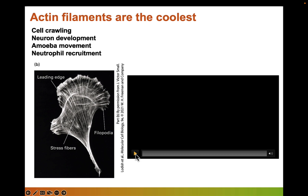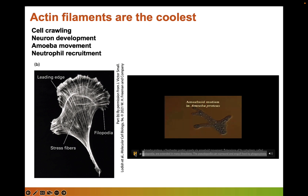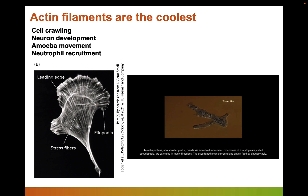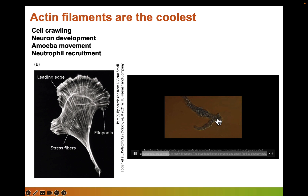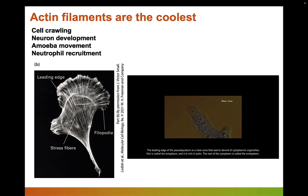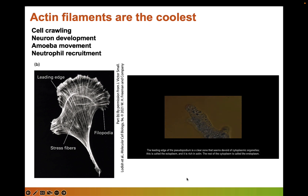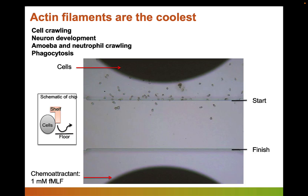Here's a video showing the role of actin in amoeboid movement. These are really cool structures. This amoeboid movement similarly requires actin — you can see it propelling its body forward and all the organelles moving forward with the cytoplasm. Instead of calling the leading edge a lamellipodium, in amoeba it's called a pseudopodium — just different words for different organisms.